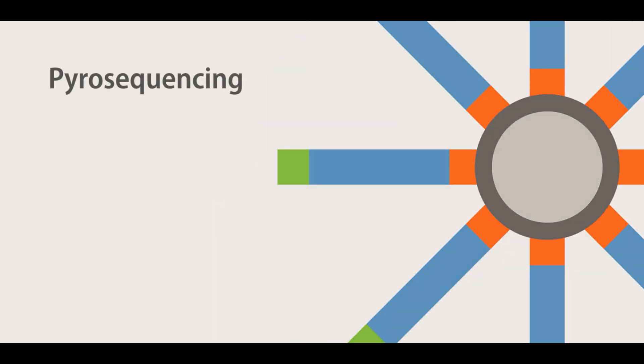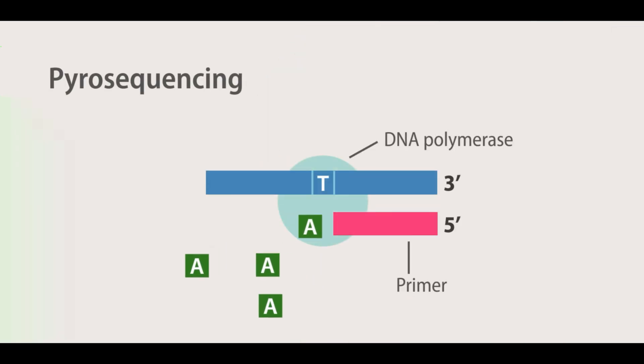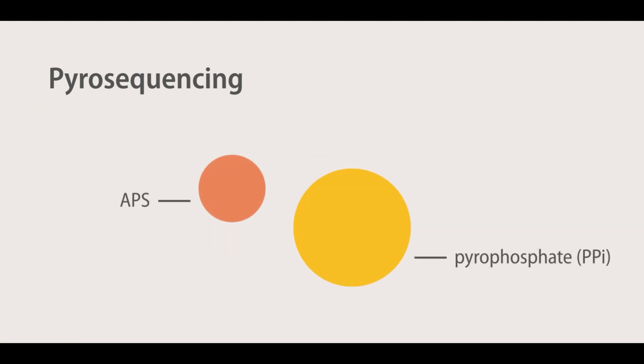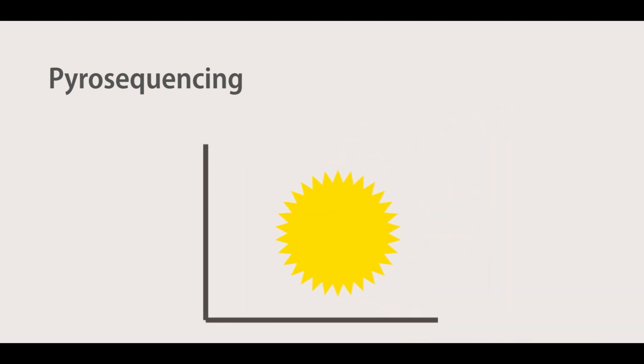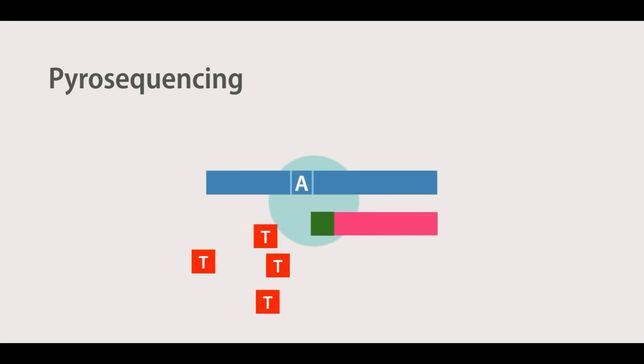In pyrosequencing, the sequencing reaction is monitored through the release of a pyrophosphate during each nucleotide incorporation. The released pyrophosphate is used in a series of chemical reactions resulting in the generation of light.